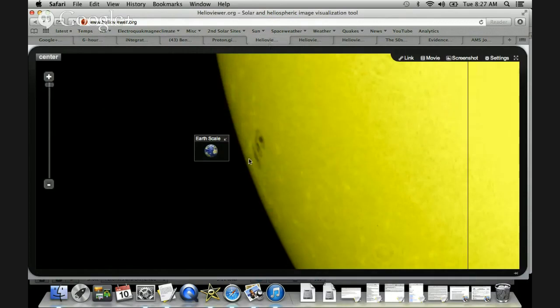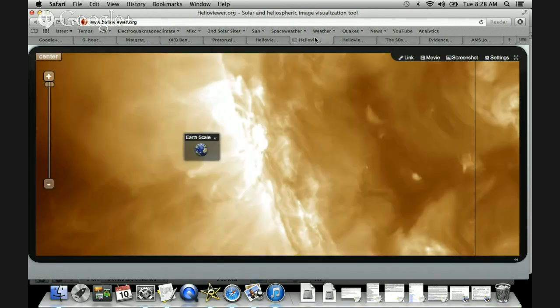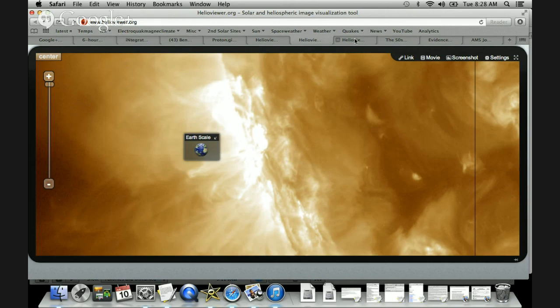This sunspot group itself contains three umbras that are each about the size of the United States. Together, they span an area that's probably bigger than the Earth. The solar flare itself came out of this region, which had actually produced most of the larger C flares so far in the morning.